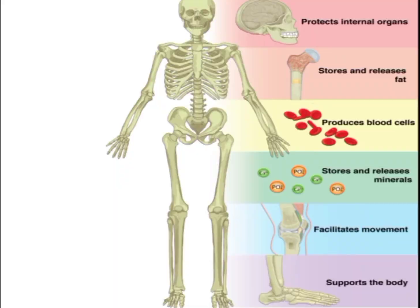Let's understand these functions through this picture. It protects internal organs, stores and releases fat, produces blood cells, stores and releases minerals, facilitates movement in your body, and supports the body. So we have seen that the skeletal system performs so many important functions.